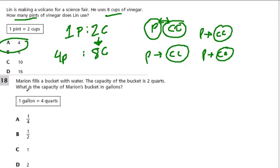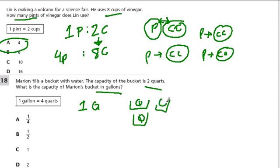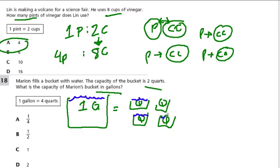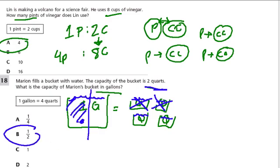Marion fills a bucket with a capacity of two quarts. What is this in gallons? If one big gallon equals four quarts, and I fill this gallon jug up I also fill up all four quarts. So if I cut this in half, I also take away half of the quarts. Two quarts is a half gallon because four quarts is the full gallon. So the answer is B.